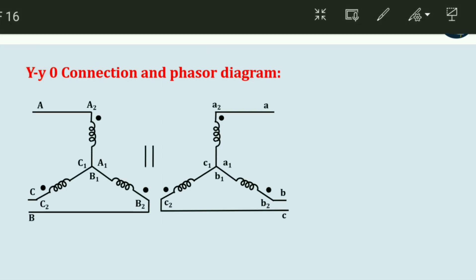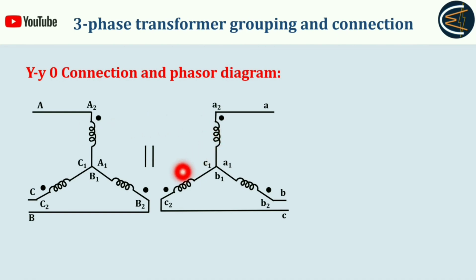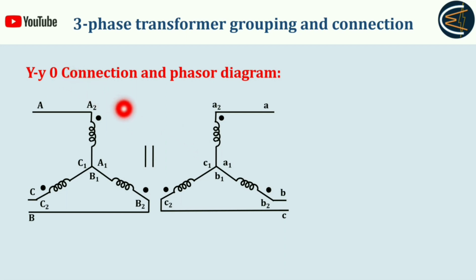As you can see, this is the configuration of the YY0 connection. YY0 means both primary and secondary sides have a Y connection or star connection. The '0' means there is zero phase displacement — no phase displacement between the primary side line voltage and the secondary side line voltage. So YY0 means there is no phase displacement.